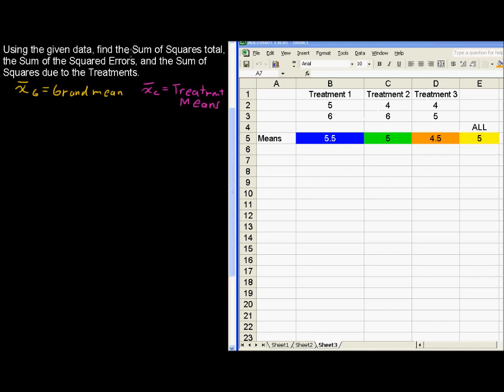To find the sum of squares total, commonly called SS, that equals the sum of the square of every single difference. So, 5 minus 5 quantity squared, 6 minus 5 quantity squared, and so on.